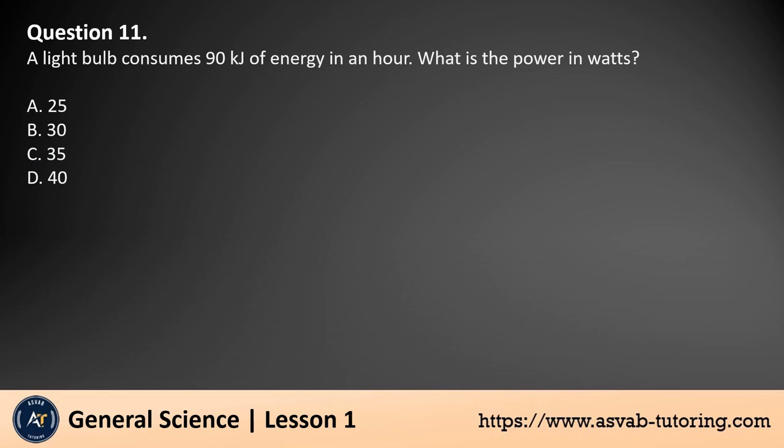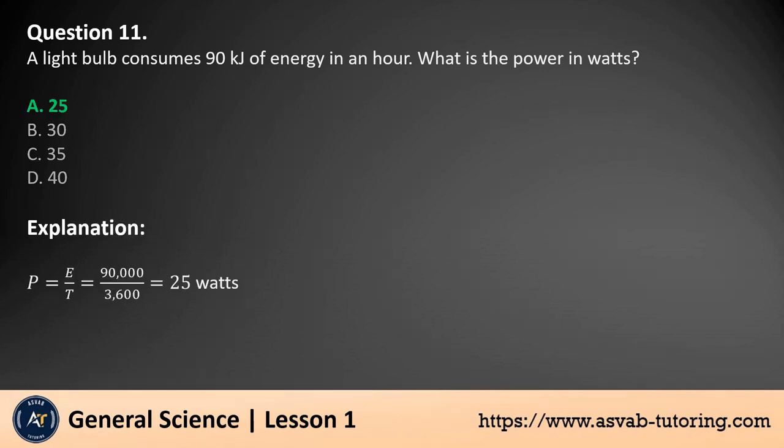Question 11. A light bulb consumes 90 kilojoules of energy in an hour. What is the power in watts? a. 25. b. 30. c. 35. d. 40. The answer is a. The power is equal to energy divided by time. Therefore, the power is 25 watts.